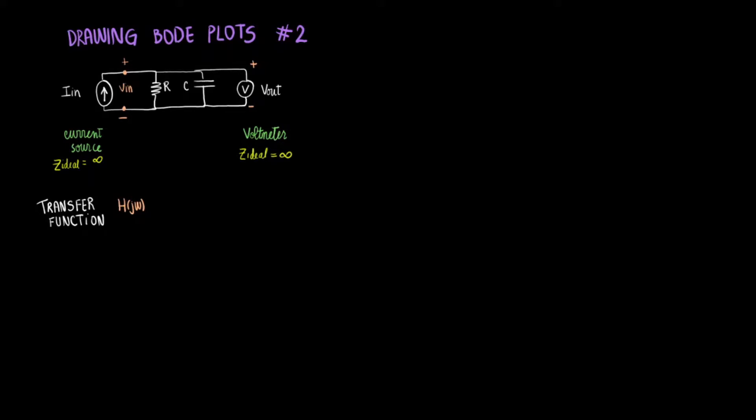In the circuit drawn, we have a current source at the input and a voltmeter at the output. In this case, we can devise a transfer function that consists of the output voltage over the input current as functions of j omega.